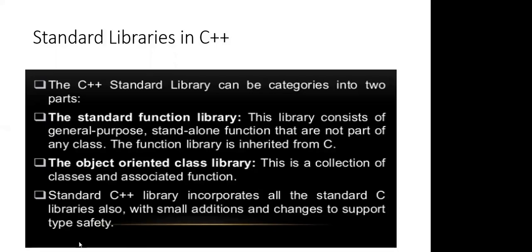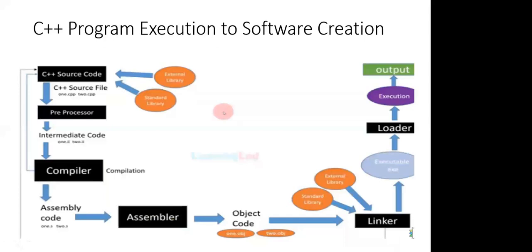If someone asks you what are the two standard libraries in C++, the answer is: standard function library and object-oriented class library. Next is program execution — how the C++ program is executed. You may be asked in a Viva or interview about the role of loader, linker, executable file, or object file, so listen carefully.